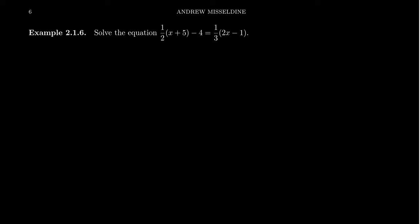Now, there are situations where something like the following might arise. This is sort of like a worst-case scenario when it comes to solving linear equations. Take something like 1/2(x+5) - 4 = 1/3(2x-1).